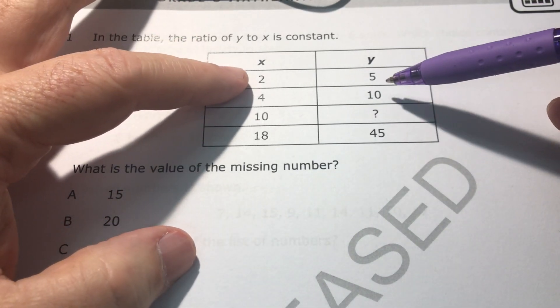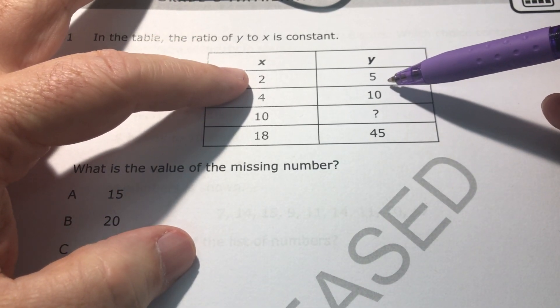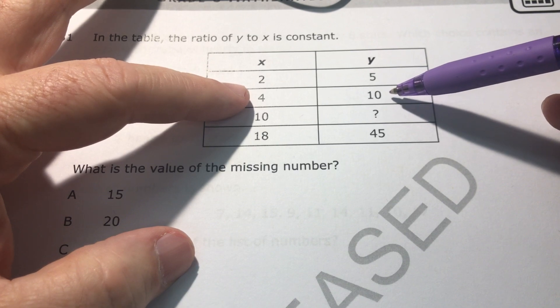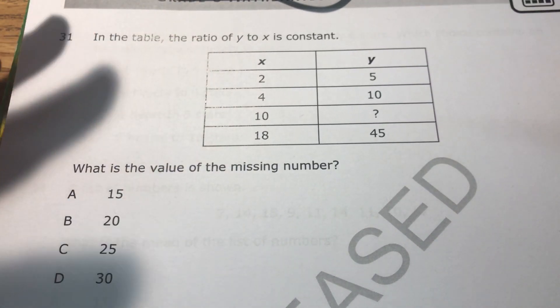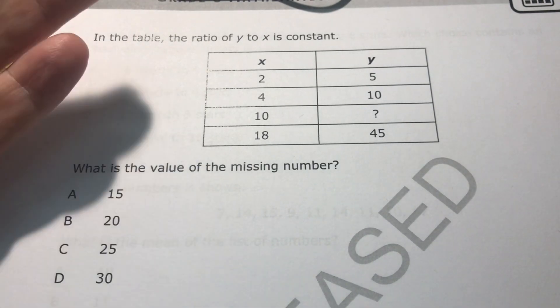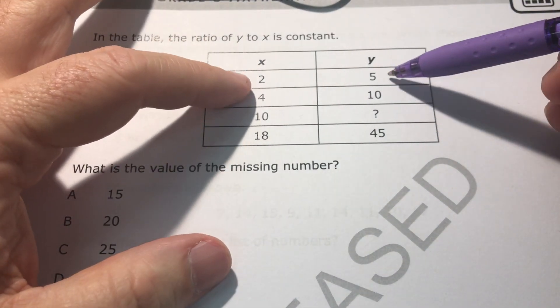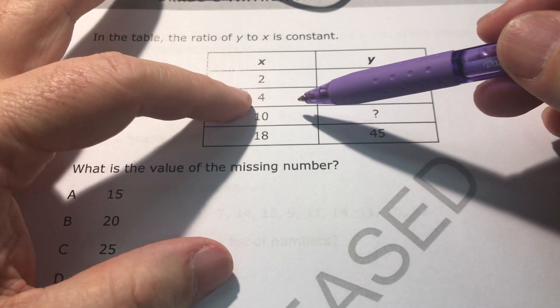So for instance, two to five and four to ten. If you made these into fractions that would be two-fifths and four-tenths. Those are equivalent fractions or equivalent ratios. So these relationships right here are the same. It's a two to five and a four to ten.